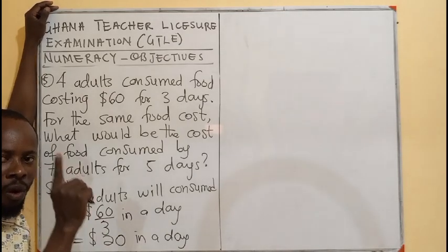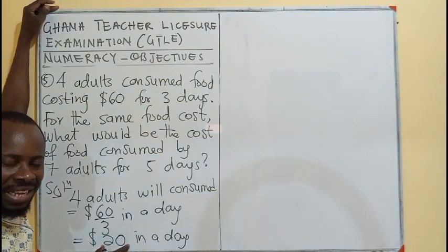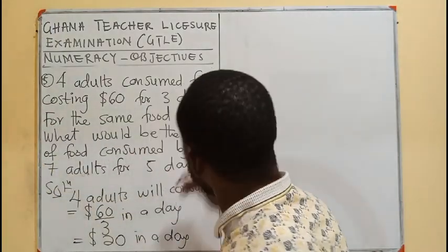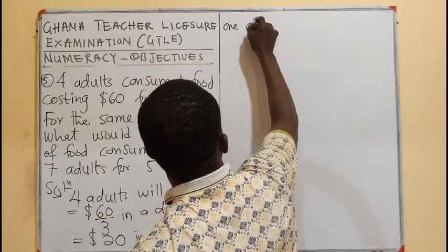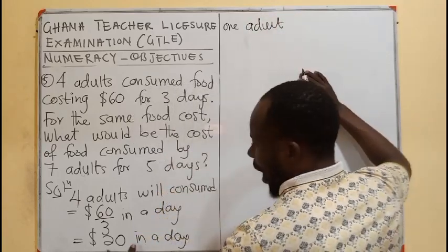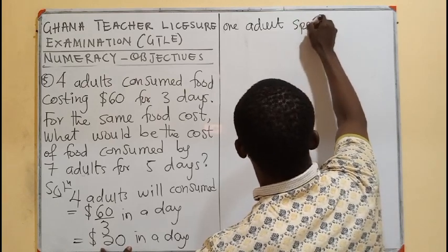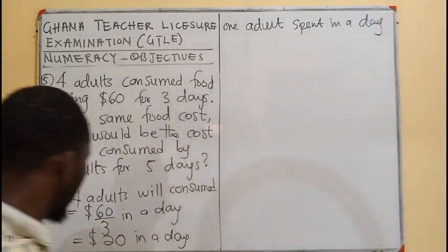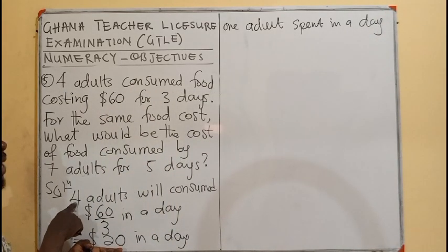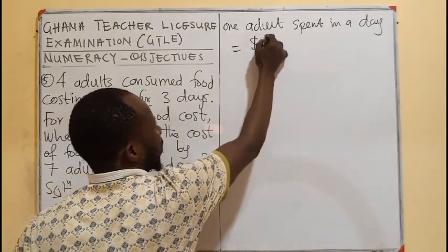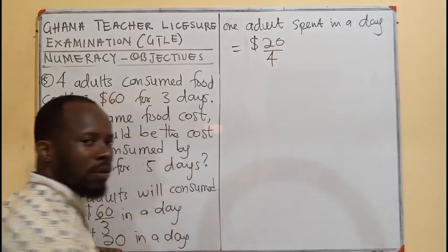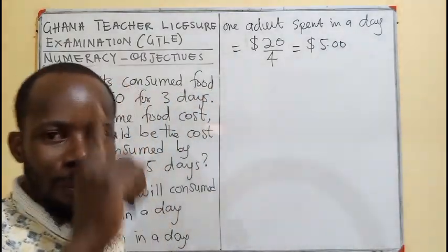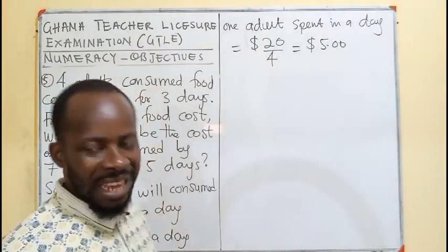Now, what about the cost for 1 person? If all 4 of them are spending $20 in a day, how much is 1 person spending? We take 20 divided by 4, and that gives us $5. So 1 person is spending $5 in a day.